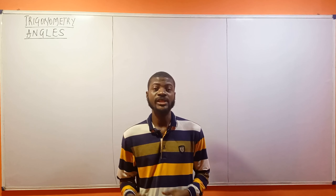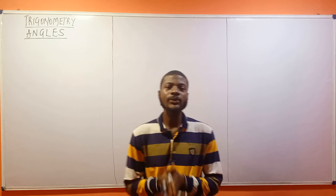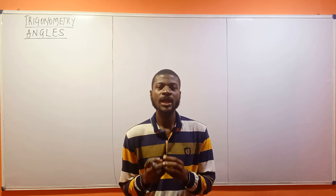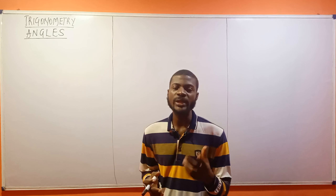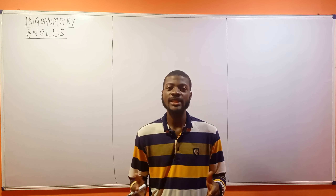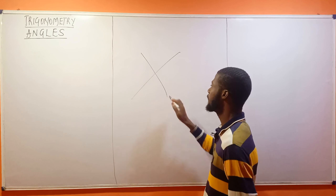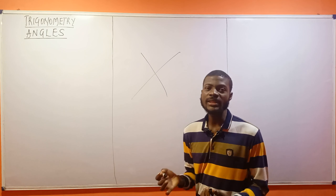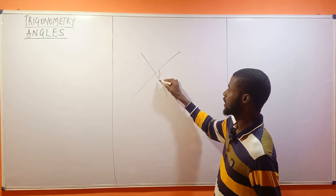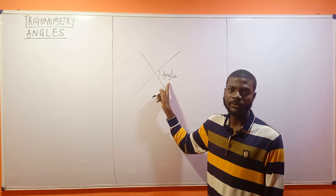In this video, I'll be treating angles. What are angles? Angles are simply a measurement of the space between two intersecting lines at a point. If I have two lines coming together, between them there's a space at this very point. This space is an angle, so we can measure this very angle.